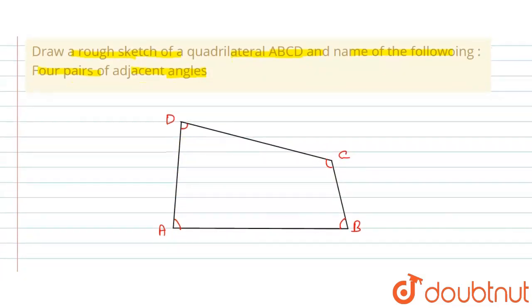A rough diagram of this quadrilateral ABCD. We will find the four pairs of adjacent angles. So what are the adjacent angles? The angles which have a common arm are called adjacent angles.